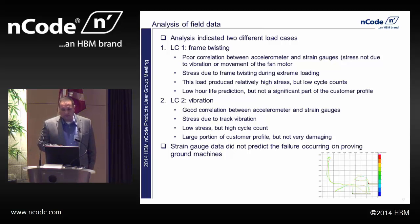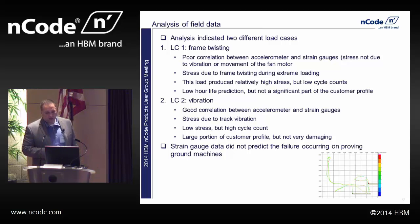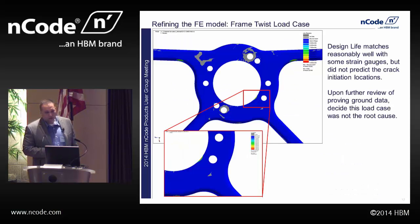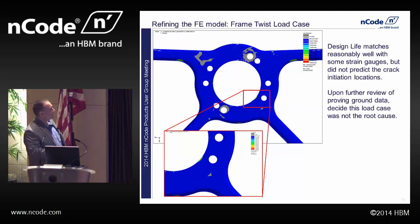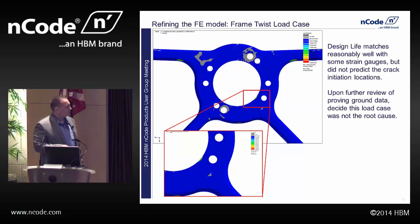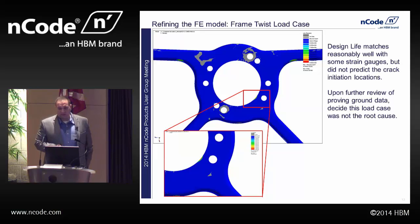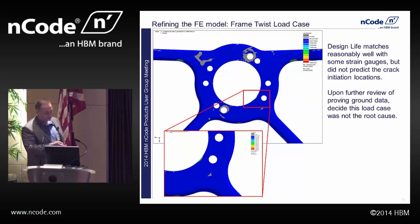The second load case had good correlation between accelerometer and strain gauge. We determined this was vibration-related — high cycle count, basically occurring whenever the machine is moving, but with low stress. So we went to Design Life focusing on the twisting load case since that seemed to be the highest stress. Design Life matched reasonably well with some of the strain gauges, but we expected high damage areas around the mounting holes and we just didn't see that. We also included part of the frame in this analysis, and that also had low damage and high life. So that forced us to go back to our test data, take another look, and we determined this was not the smoking gun — not the root cause or the load case causing the damage.